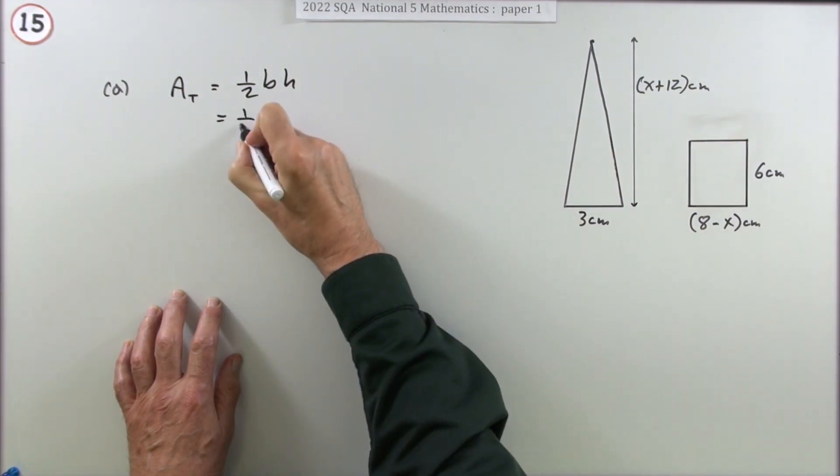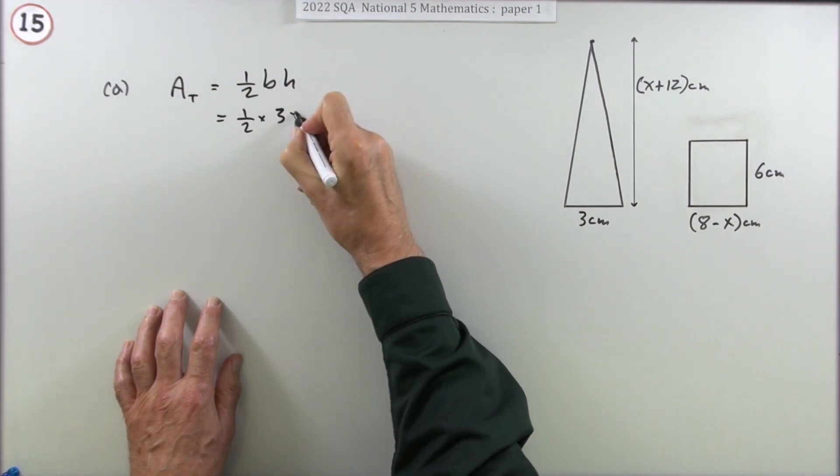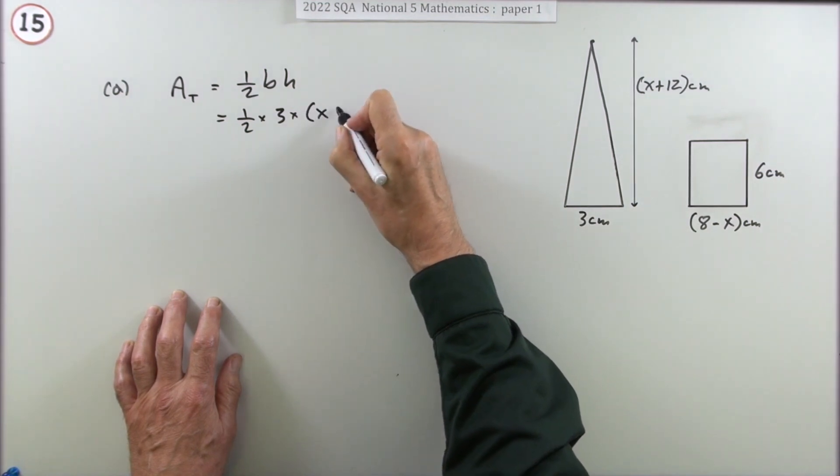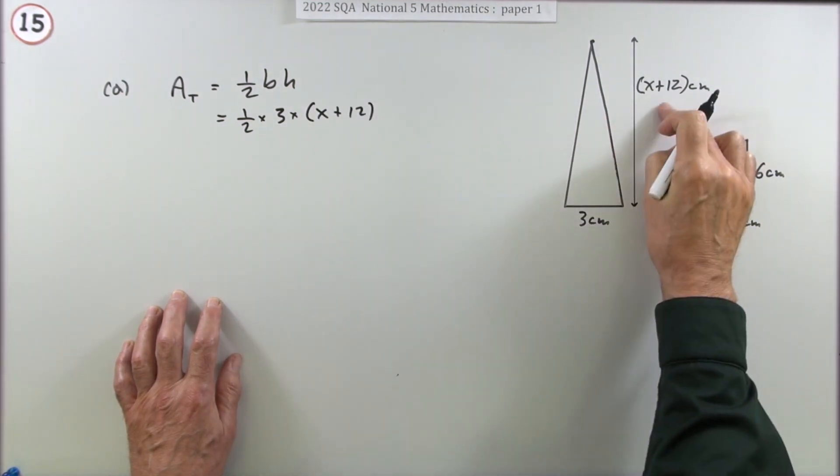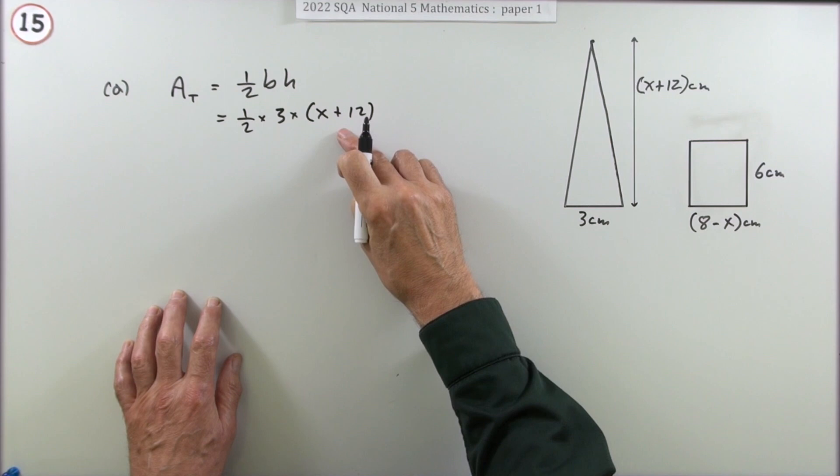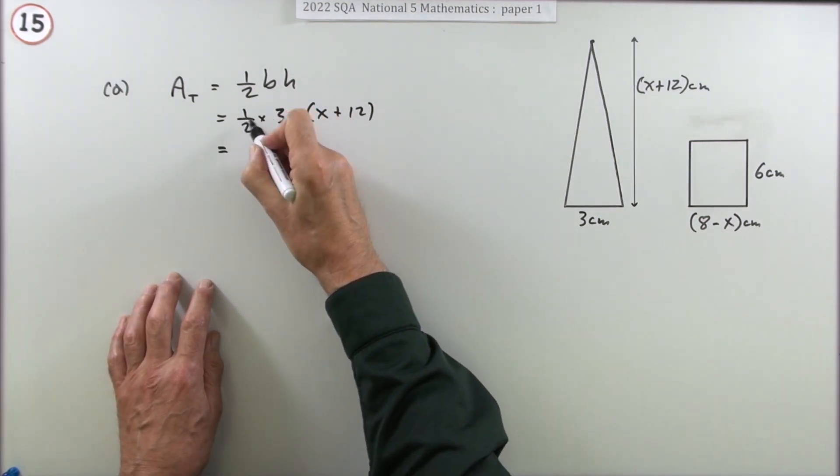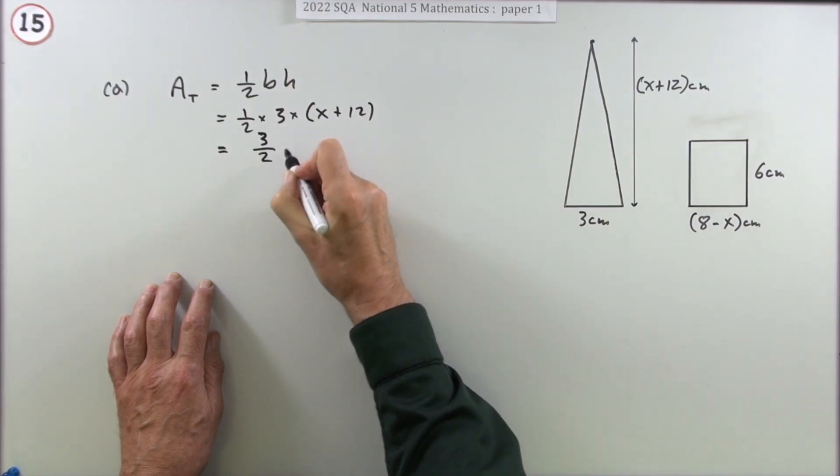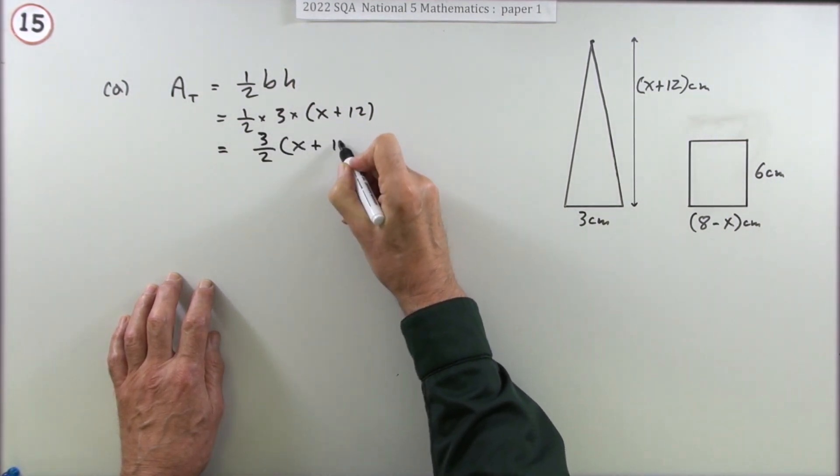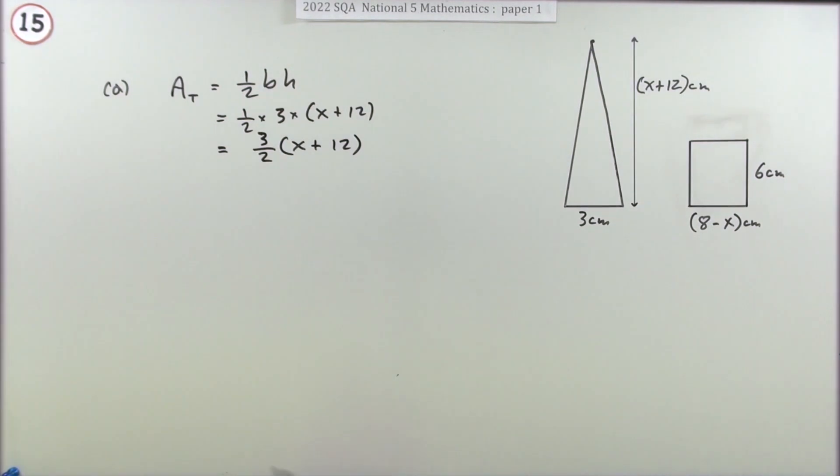So it's a half of the base which is 3, and put down the expression for the height. Just do with the letters or expressions what you would do with the numbers. There's not a lot you can do with that, but you can change that half times 3 into 3 upon 2. So write it that way: 3 upon 2 times (x + 12). That gets the mark for that part.